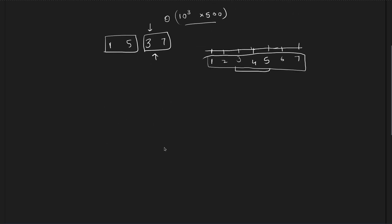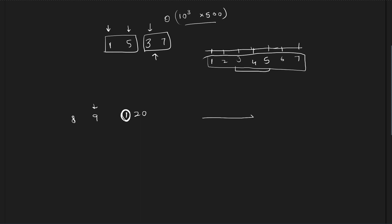A basic idea is to first sort the given ranges array according to the first element. We sort by the first element because we do not want to miss any smaller starting points. For example, if you sort by the second element, you could miss some starting elements. By sorting by the first element, we ensure we traverse linearly without skipping smaller values. Once the ranges are sorted by starting position, the problem becomes a straightforward implementation.